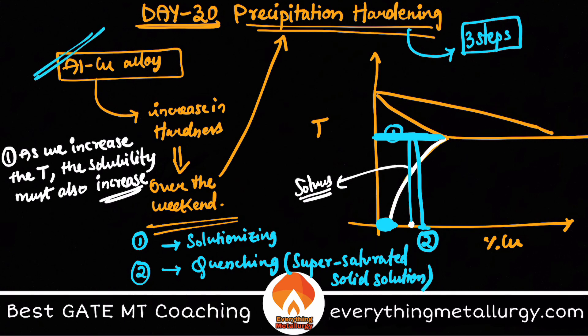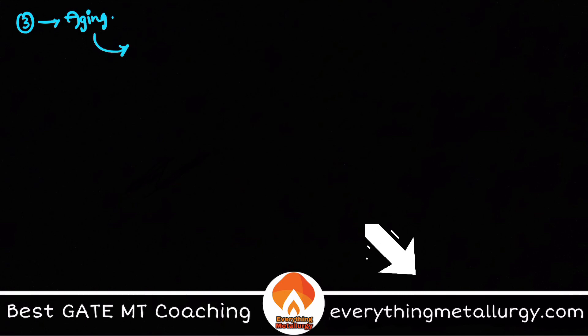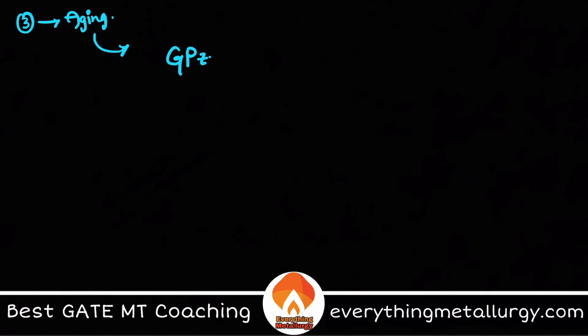These are the two steps the scientists performed during World War II — then they left after doing these two steps. The third step is called aging. Aging means that with increasing time, precipitates evolve: first GP zones form, which are converted to θ'' (theta double dash), then to θ' (theta dash), and finally the equilibrium precipitate θ (theta), which is CuAl₂, is formed.